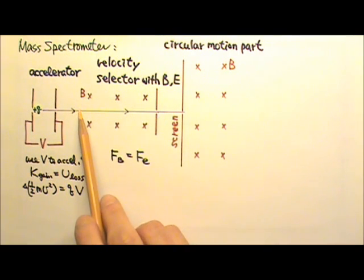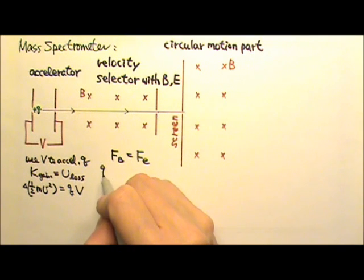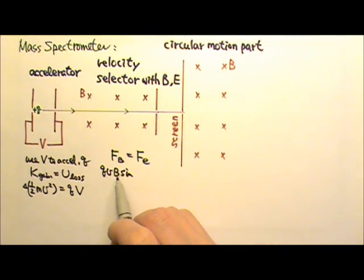The positive q can go undeflected because the magnetic force and the electric force are equal and opposite, so they can cancel each other. The magnetic force in this case is qvB times the sine of the angle between v and B.